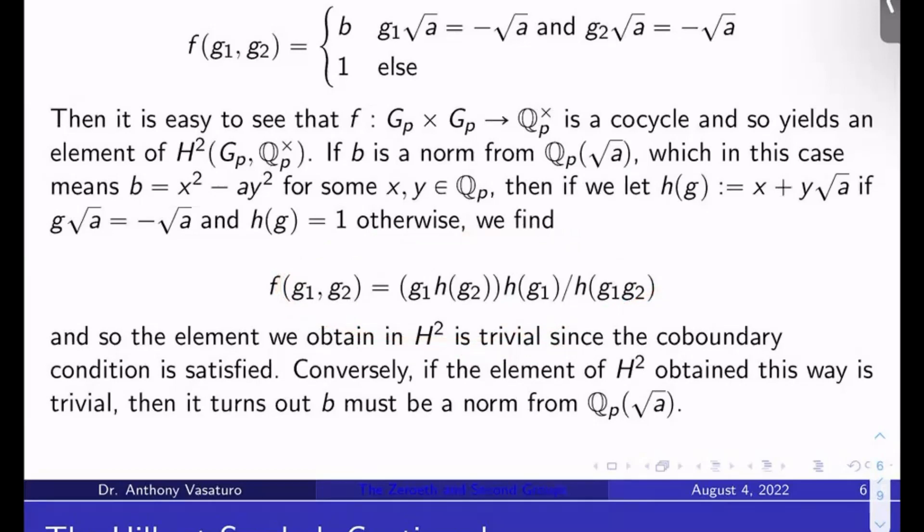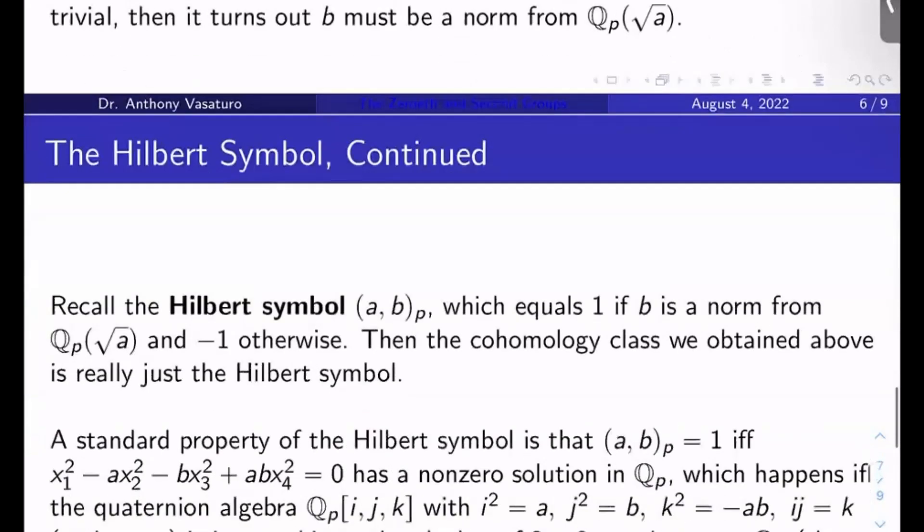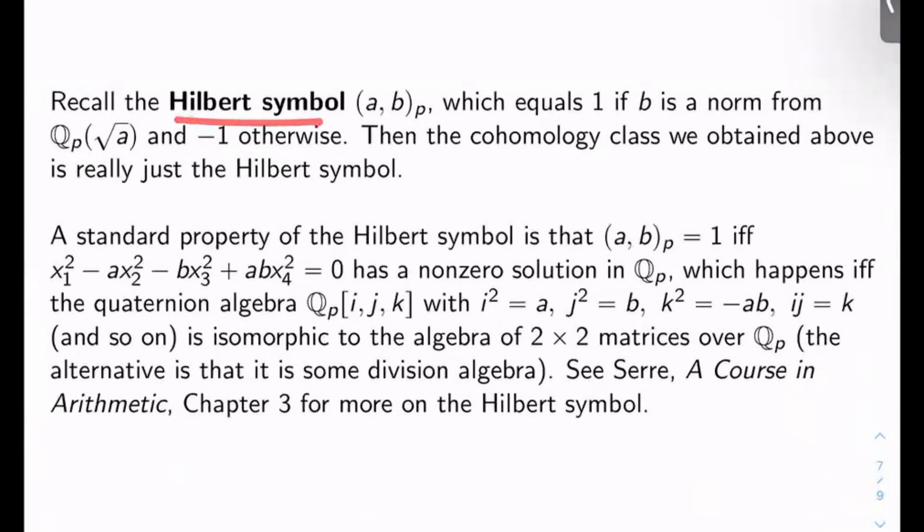And so the element you obtain in H² is trivial because the coboundary condition is satisfied. Your class is trivial because H² is cocycles mod coboundaries. Your cocycle in the case where b is a norm from Q_p(√a) is already a coboundary, and so its class in H² is trivial. It also turns out if the element of H² obtained this way is trivial, then b must have been a norm from Q_p(√a). So the converse is true as well. What's really going on here is the Hilbert symbol (a,b)_p, which equals 1 if b is a norm from Q_p(√a) and -1 otherwise. The cohomology class we obtained is very closely related to the Hilbert symbol.